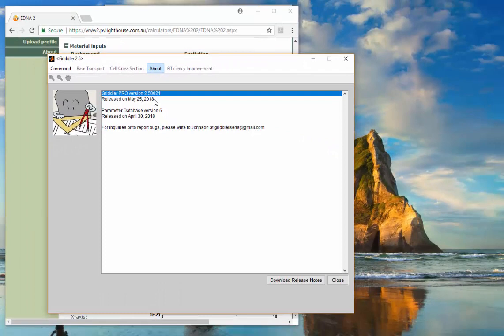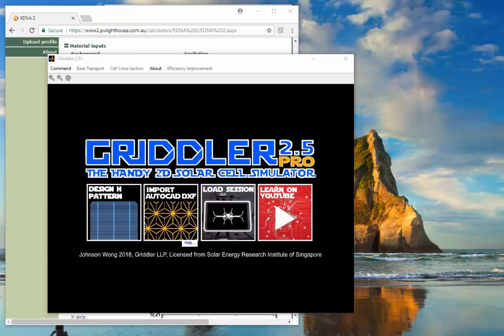It is important that you constantly update your version of Gridler. And recently, we have gone through some refinements in the emitter calculation procedure. So please ensure that you have version 2.50021 or later.